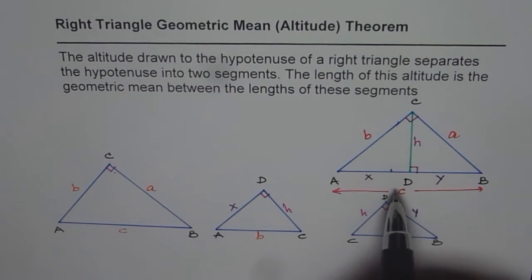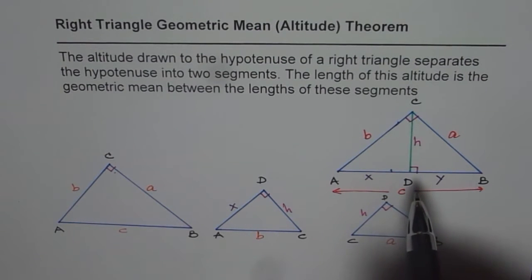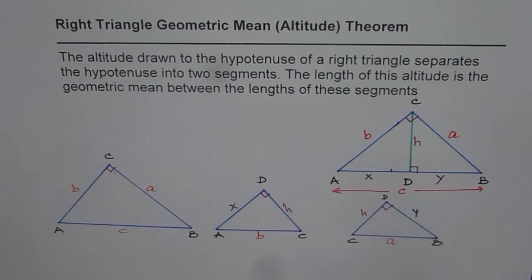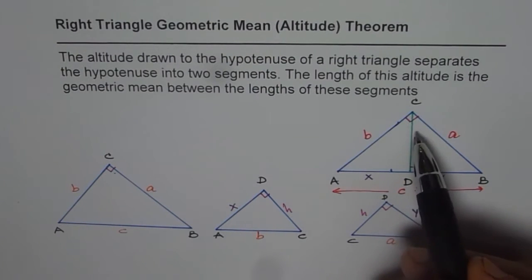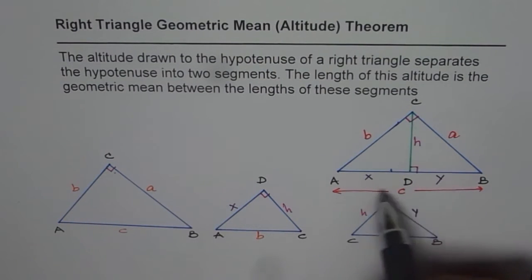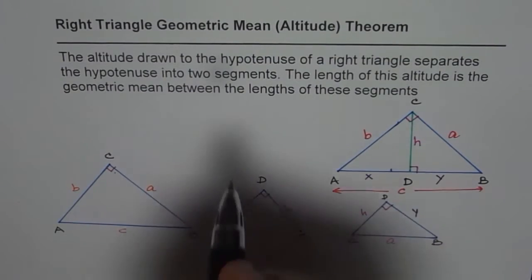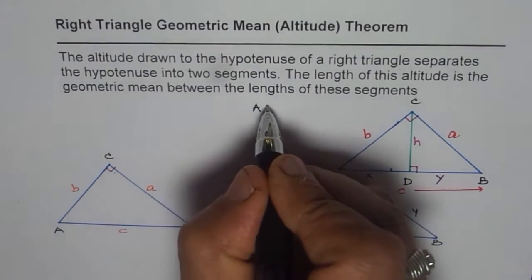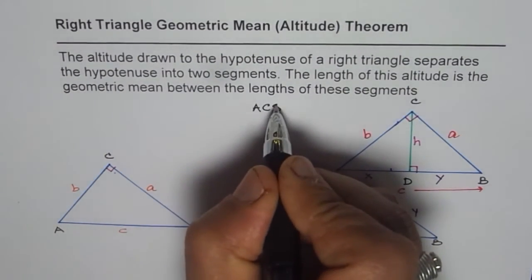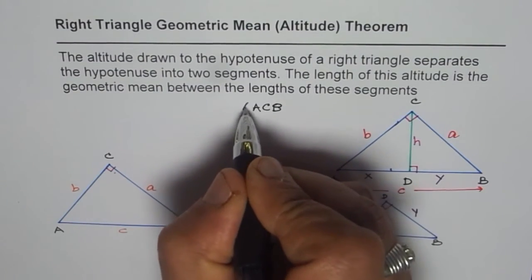So this we actually prove from similarity, which we have already proven in one of the previous videos. But here let's look into it once again. So let me first consider the big triangle ACB. So we are considering triangle ACB.